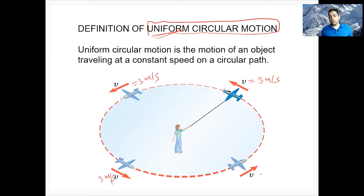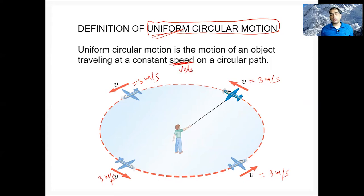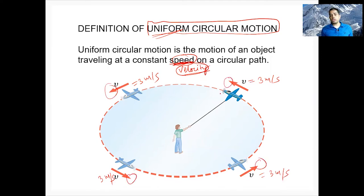That's called uniform circular motion. Keep this in mind: speed, not velocity. Velocity is not constant because velocity requires a direction also. At this point the direction is this way, at this point direction is this way, at this point direction this way — so direction is changing. That's why velocity is not constant, but speed is constant.